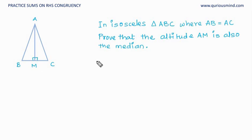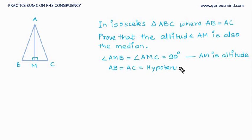We know that AM is altitude, hence the angle is 90 degrees. Then it is given that AB is equal to AC, and these are respective hypotenuse. And we can see that AM is common.